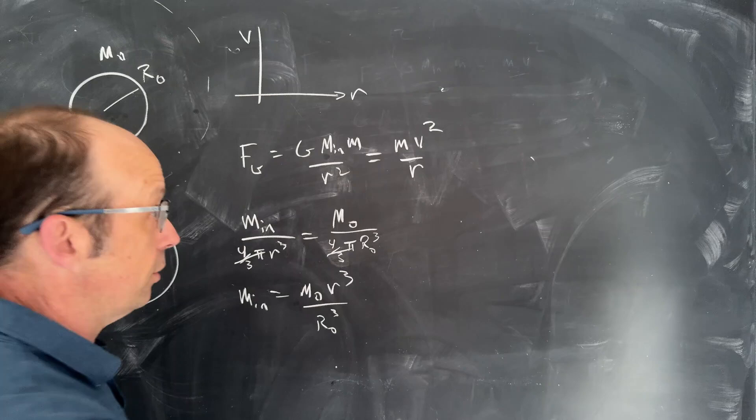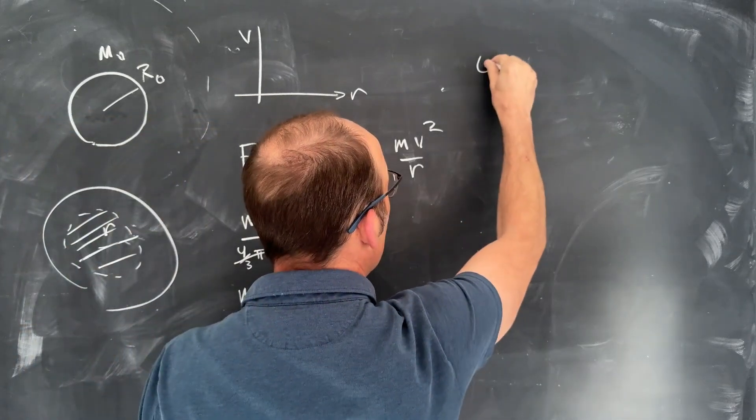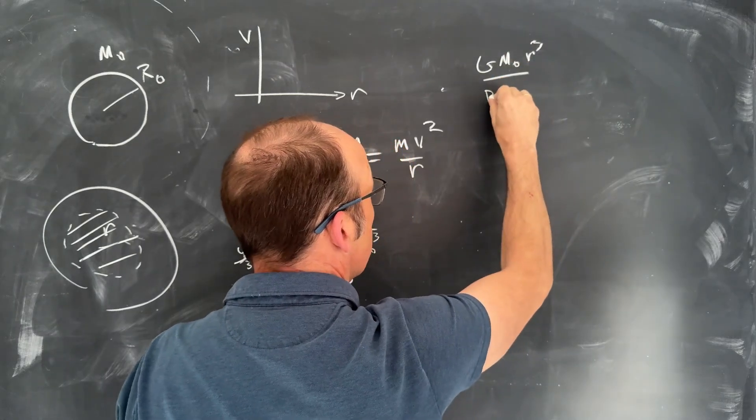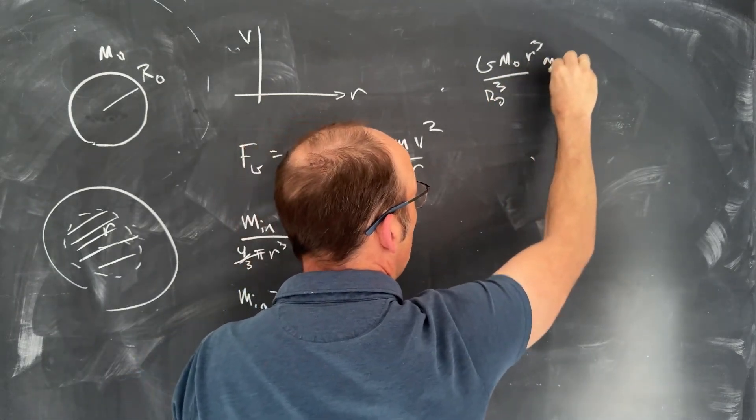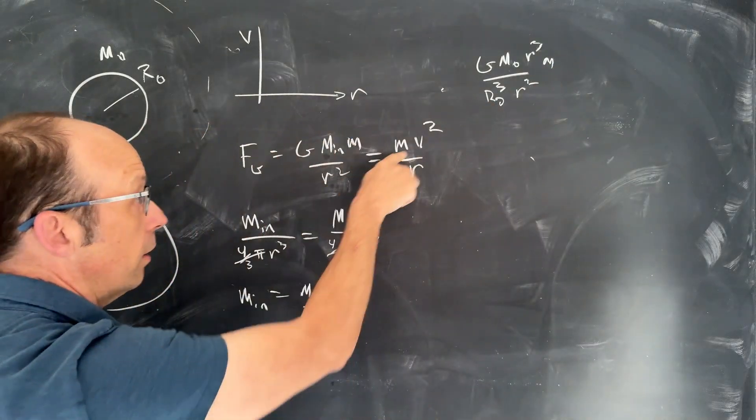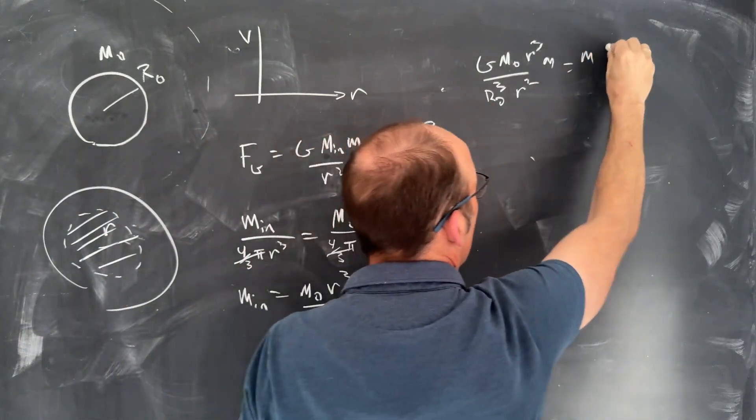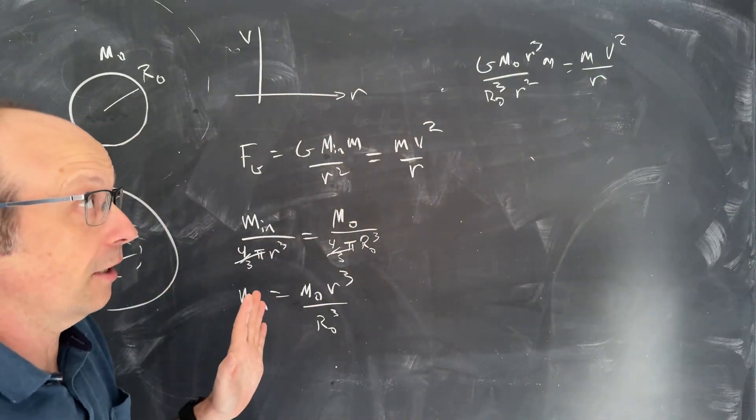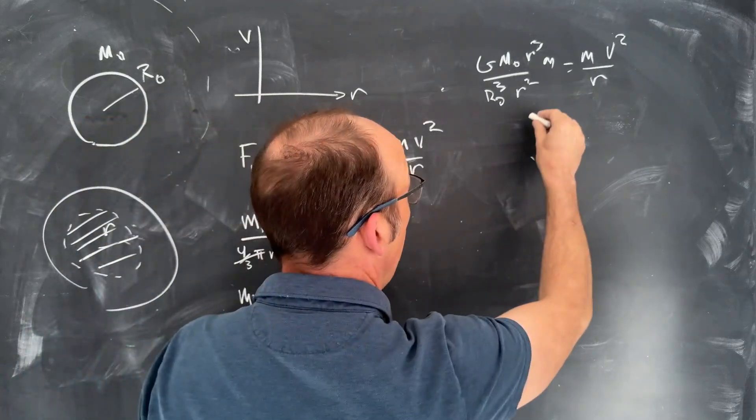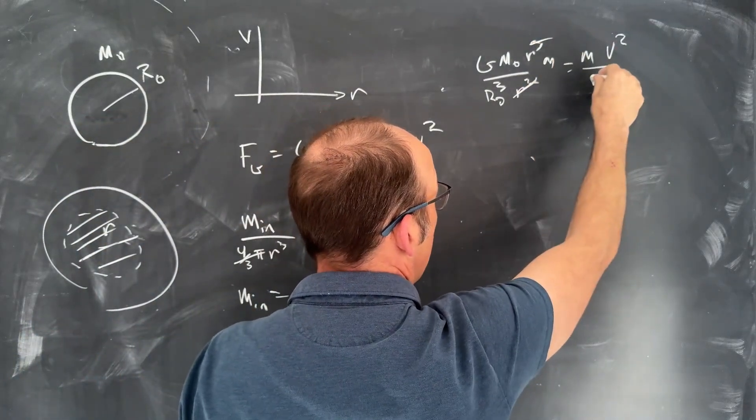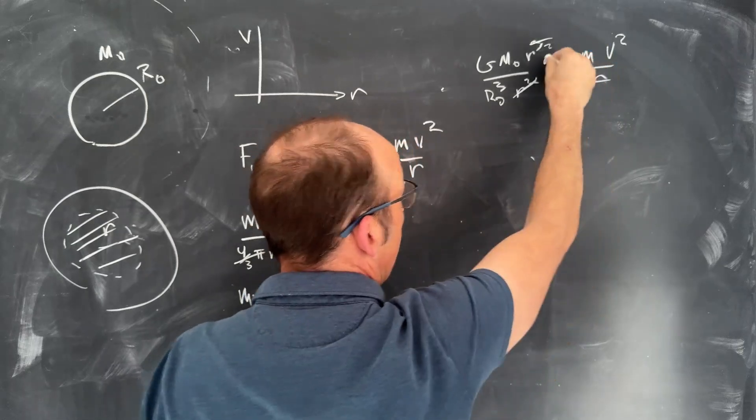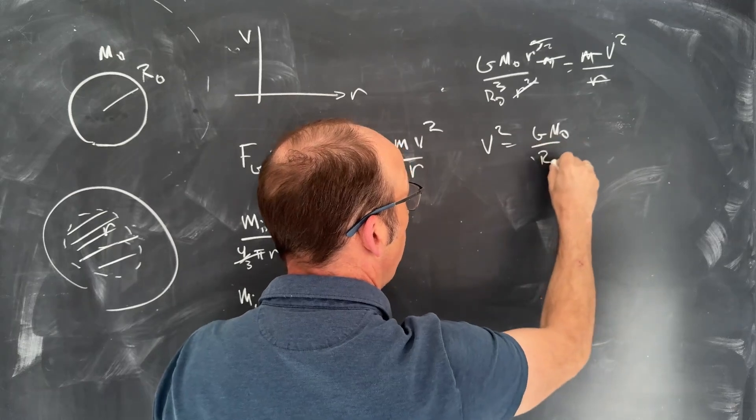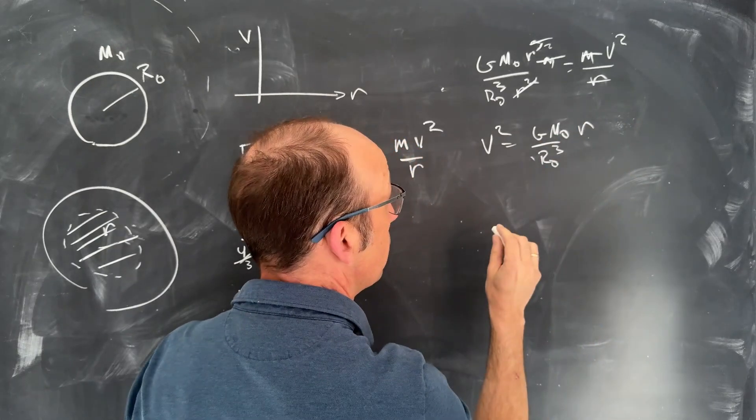Now I can put that in up here in this expression, and I get G m0 r³ over r0³, and I have an m, r squared, there's my r squared, and that's going to be equal to m v² over r. Now I have a bunch of r's in there and some of them cancel. So here I'm going to get that cancels that, and then if I move this up here, it gets squared. And that mass cancels, so I get v² is G m0 over r0³ r².